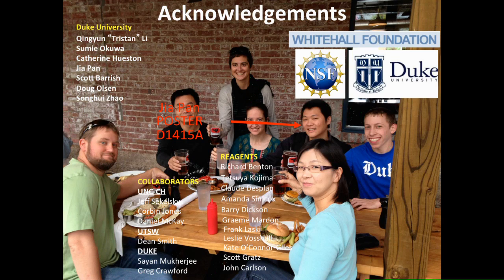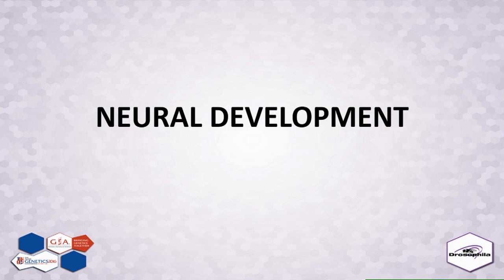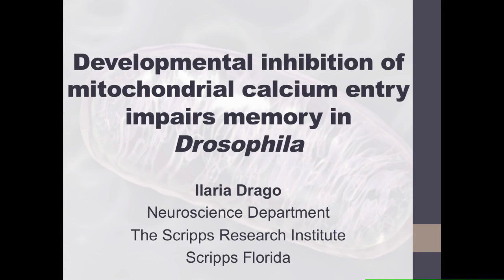The next speaker is Ilaria Drago. Her talk is 'Inhibition of Mitochondrial Calcium Entry in Mushroom Body Neurons During Pupation Causes Memory Impairment and Neuronal Structural Defects in Adult Flies.' Good afternoon. I would like to thank the organizers for the possibility to present my results.